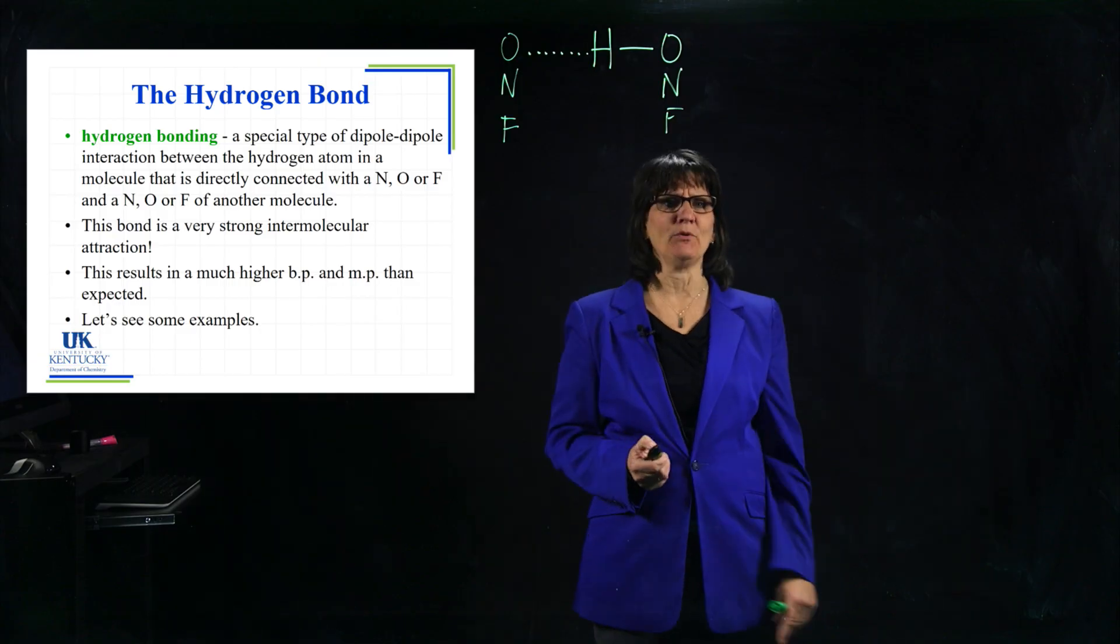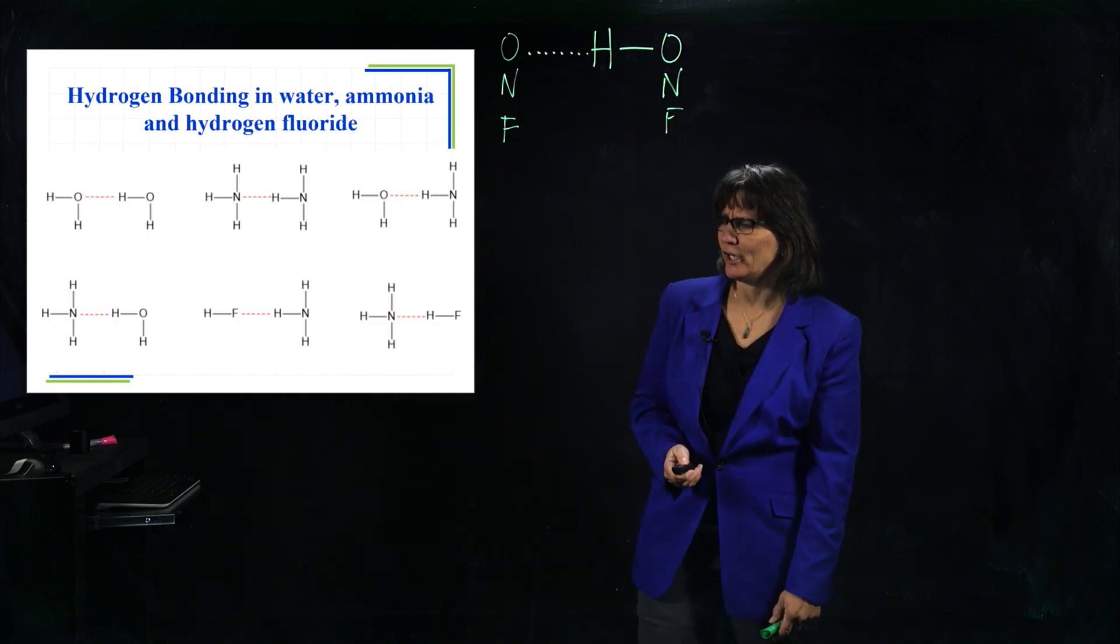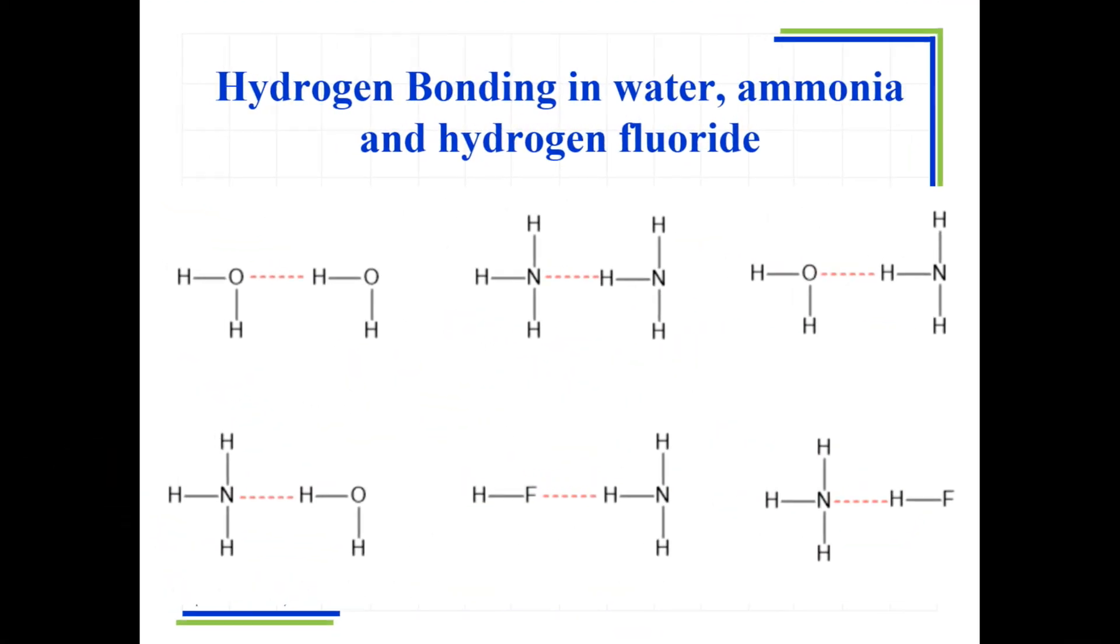So let's see just some examples and see how they play out here. I'll move to the screen and we'll talk through them. We have, in this case, a hydrogen directly connected to an O in this molecule. This molecule has an O and that dashed line is the hydrogen bond.